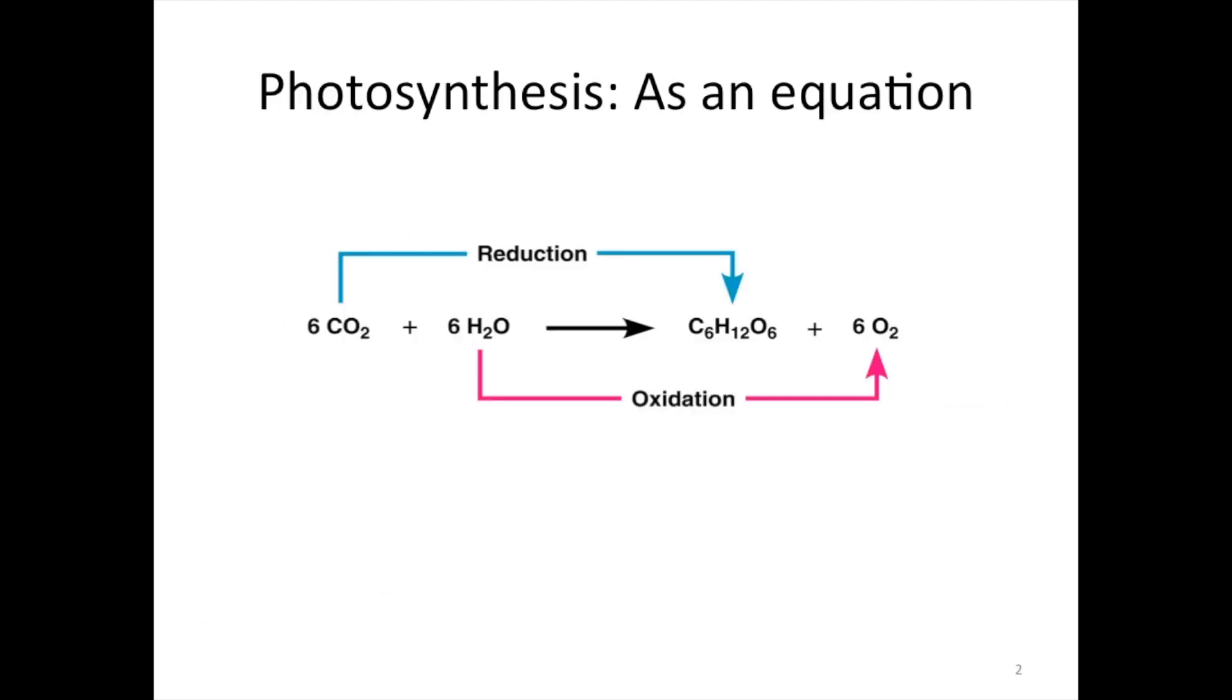I feel like we can't talk about photosynthesis without bringing up the equation at least once. So here it is. It takes six CO2 molecules and six water molecules. It requires light and the products are sugar and six oxygens. CO2 gets reduced, meaning it gains electrons, and water is oxidized, so it loses electrons.